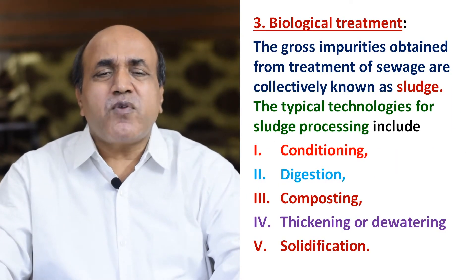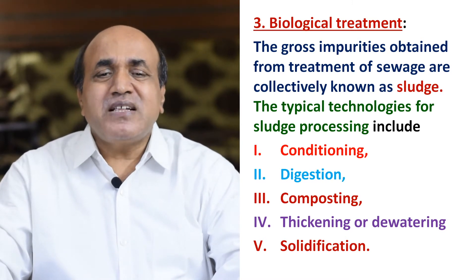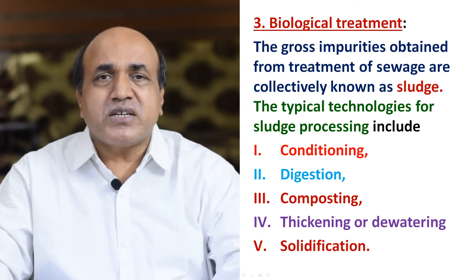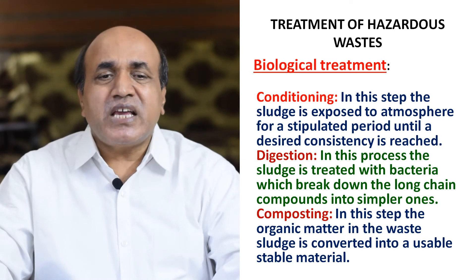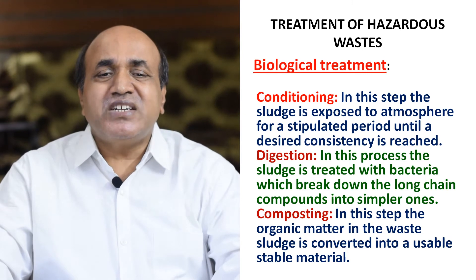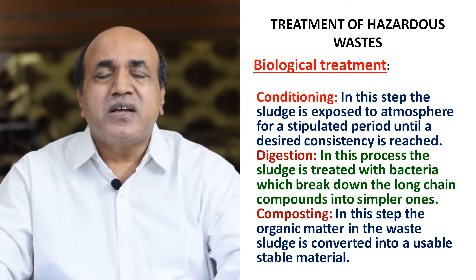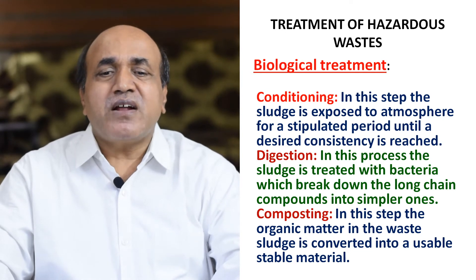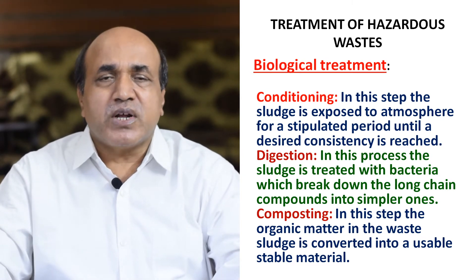Biological treatment: impurities obtained from treatment of sewage are collectively known as sludge. The typical sludge process includes conditioning, digestion, composting, thickening, dewatering, and solidification. In conditioning, the sludge is exposed to the atmosphere for a stipulated period until the desired consistency is reached. In digestion, the sludge is treated with bacteria which break down long-chain compounds into simpler ones.